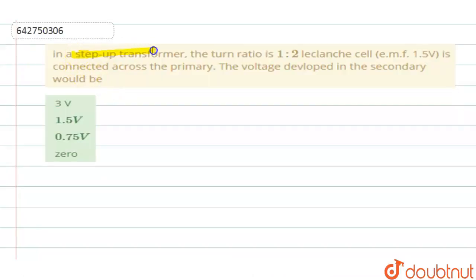In a step up transformer, the turn ratio is 1 is to 2. Leclan's cell EMF 1.5 volt is connected across the primary. The voltage developed in the secondary would be.